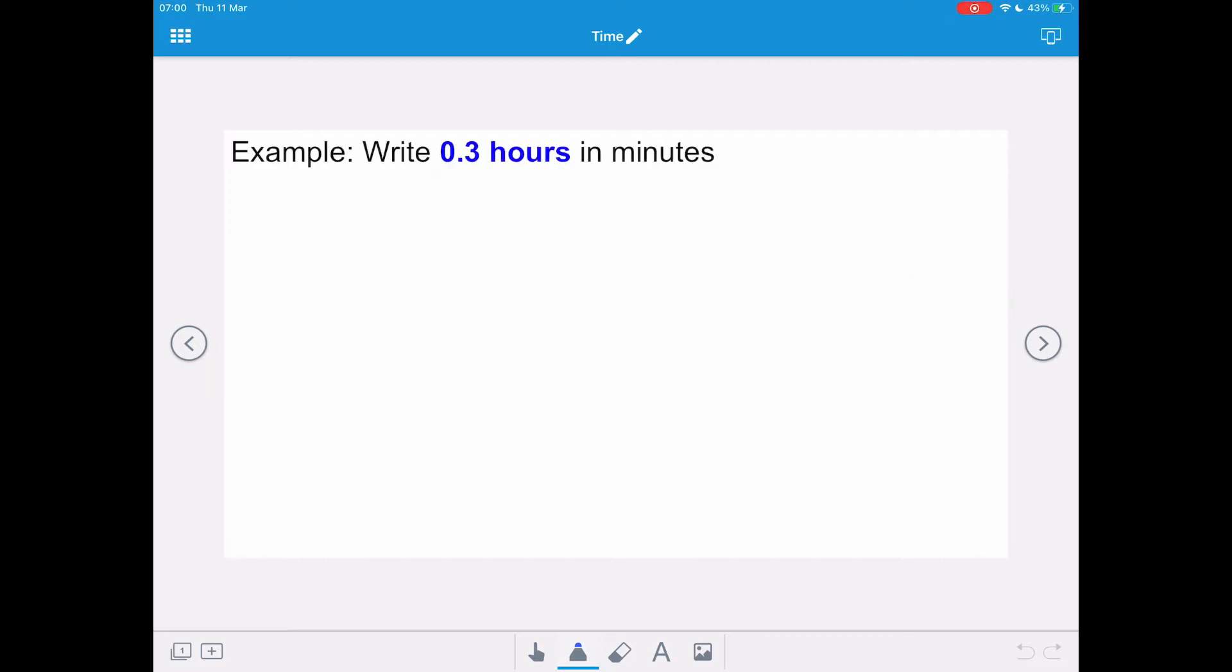In the first example we want to write 0.3 hours in minutes. There are no whole hours, so we're just going to take the decimal 0.3 and multiply it by 60 and that gives us 18 minutes.